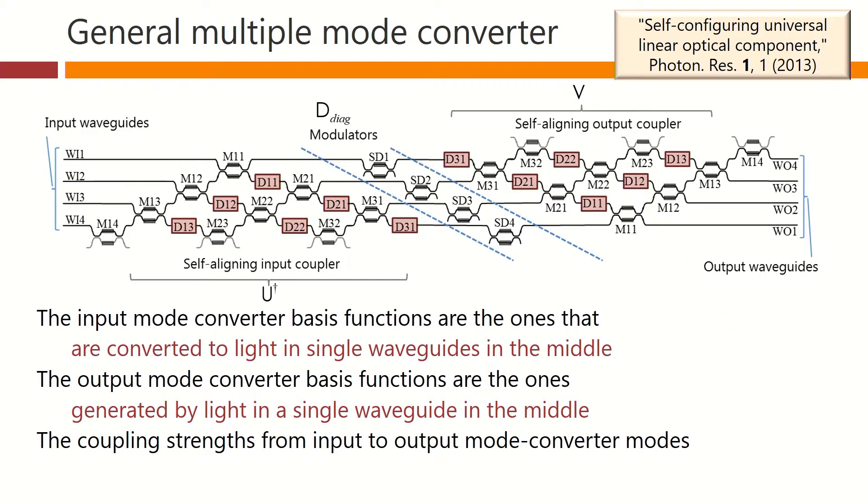The coupling strengths from the input to output mode converter modes are the singular values as implemented by the modulators in the middle. Obviously, if the singular value is to have a magnitude greater than one, we would have to add some amplification in here as well.